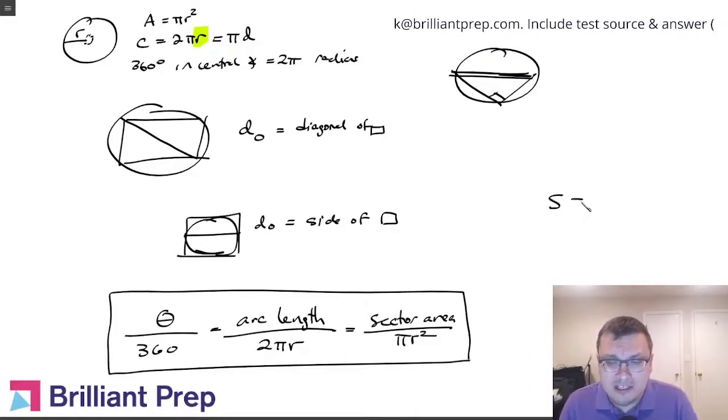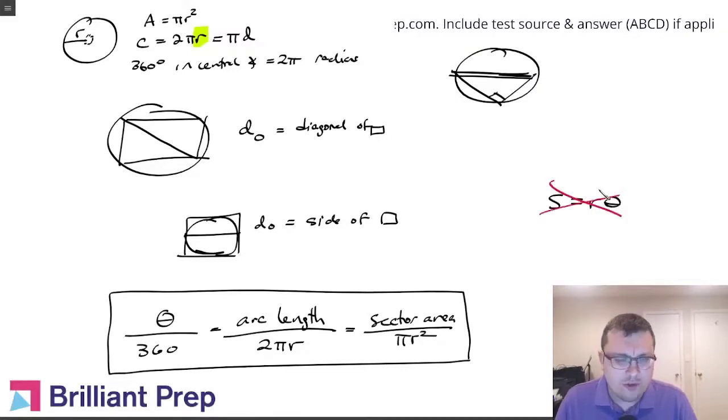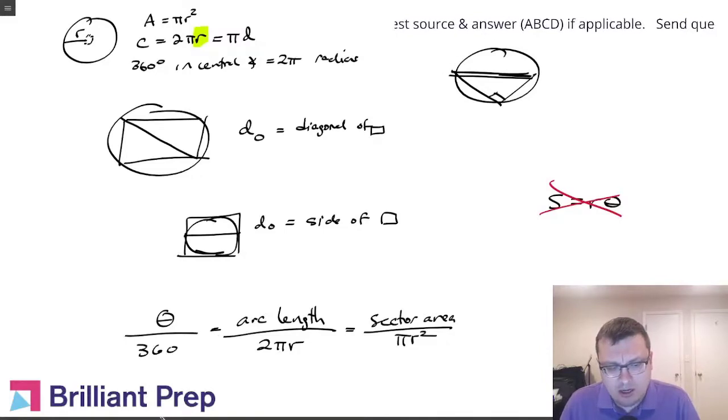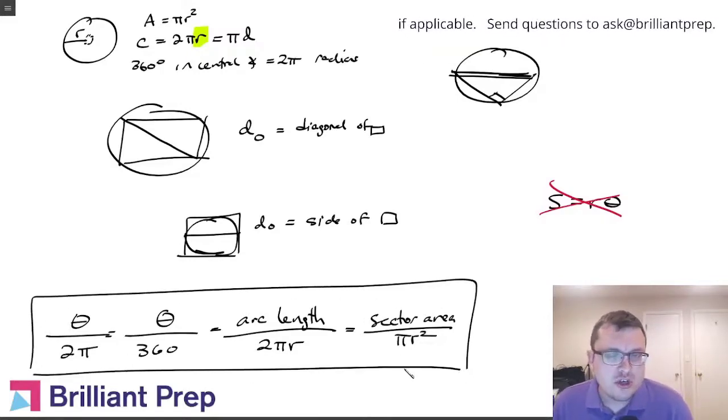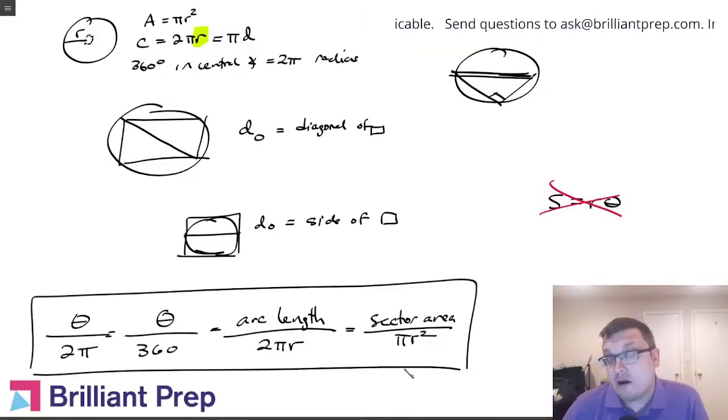You might know formulas like s equals r theta. I'm not a big fan of this for the SAT. I prefer something like this. If you wanted your angle to be in terms of radians, you could do theta over 2 pi. This is a proportion that you can use to find a missing arc length, a missing angle, or a missing sector area, given the information in the problem.